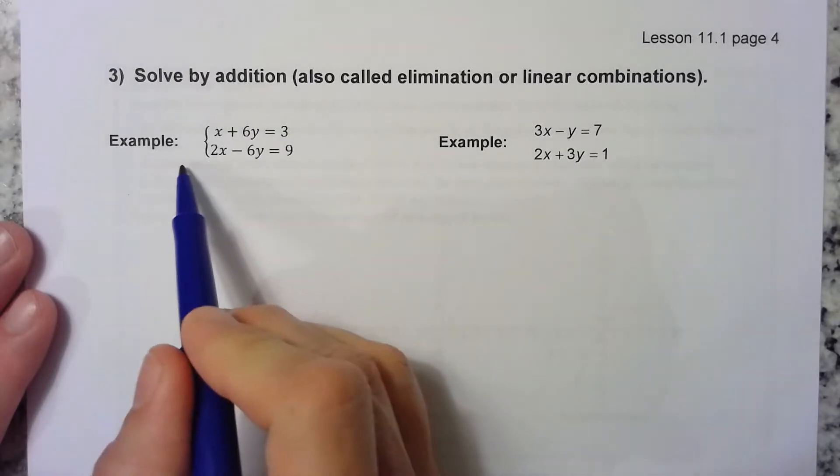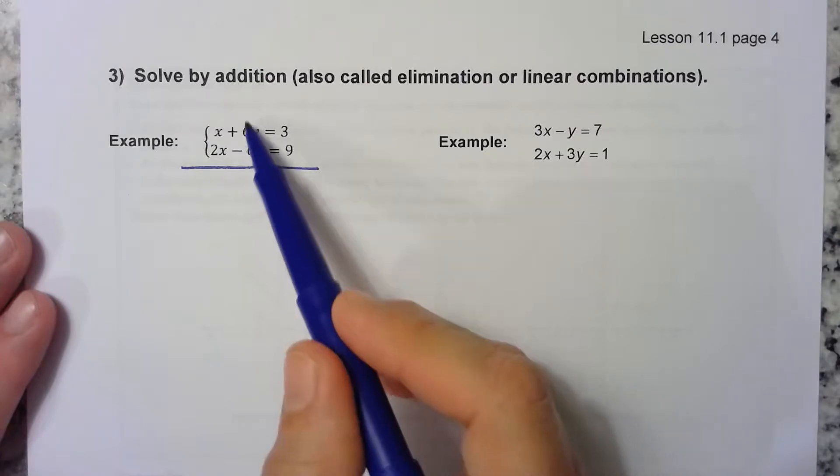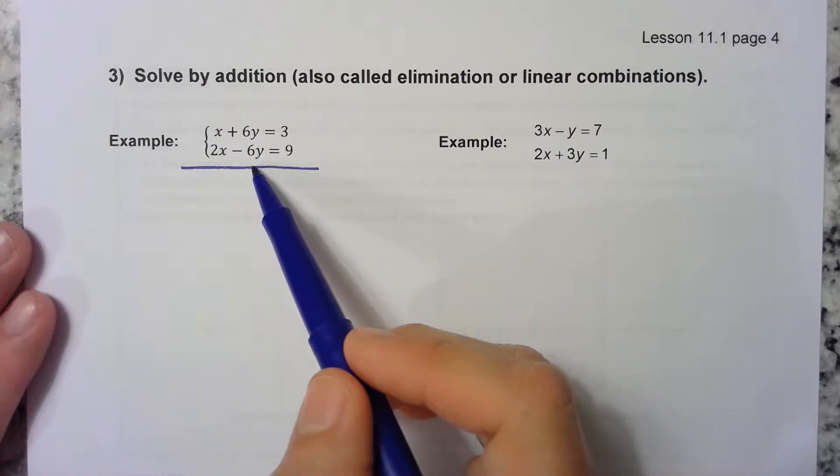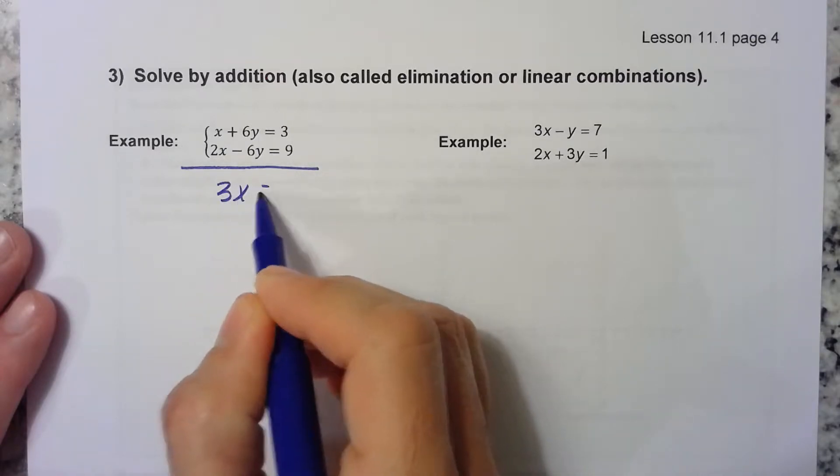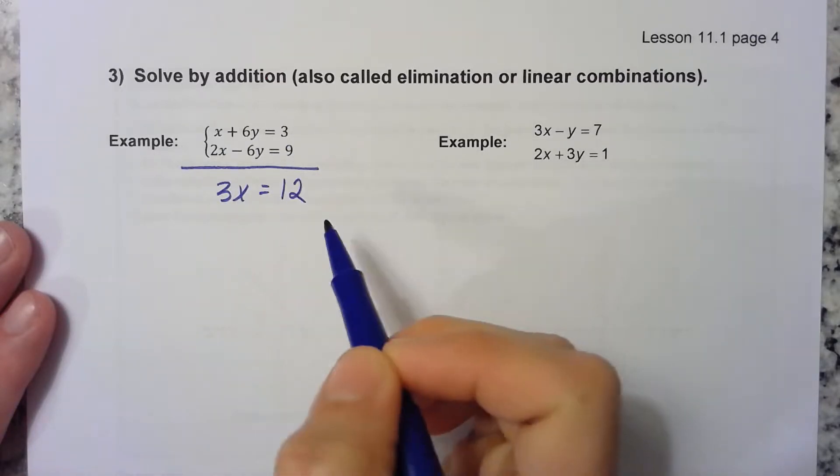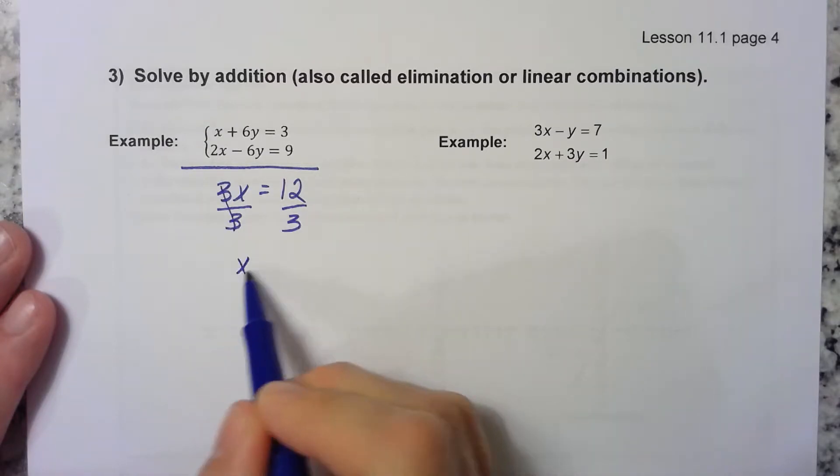let's just add these two equations together. If we do, don't these two go to 0? 6y minus 6y is 0, so we'll have x plus 2x is equal to 3 plus 9. Well I can solve that for x by dividing by 3, and I get x equals 4.